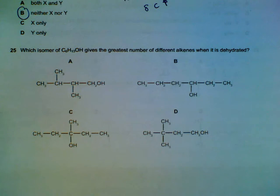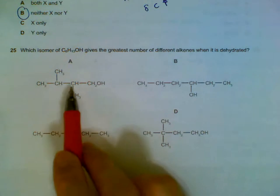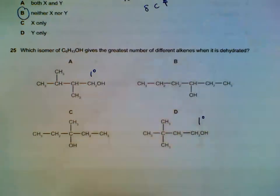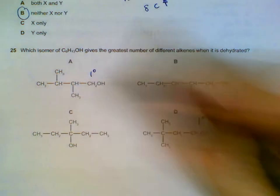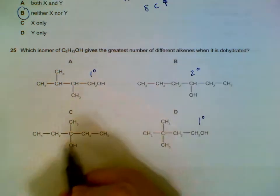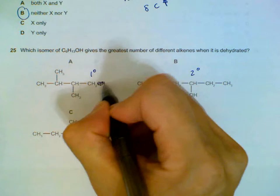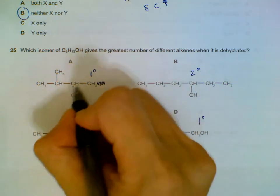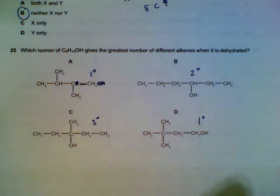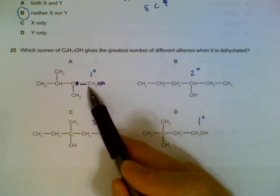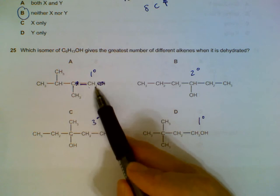Question 25: Which isomer gives the greatest number of alkenes when dehydrated? Dehydration requires removing the OH together with a H from a neighboring carbon. We identify the alcohols as primary, secondary, or tertiary. For the primary alcohol, we remove the OH and the H from the neighboring carbon, placing the double bond there. There's no cis-trans because that carbon has two identical hydrogens, so there is only one isomer.